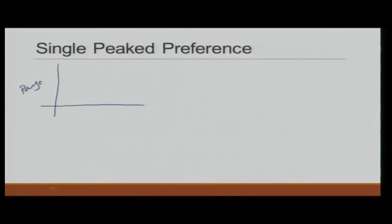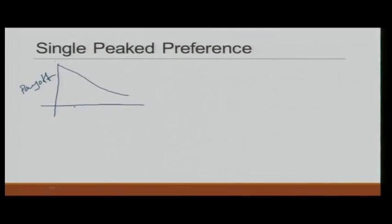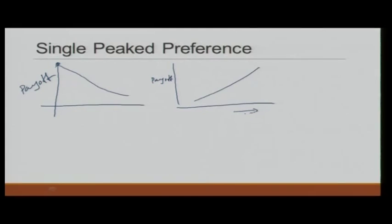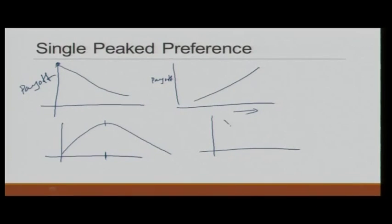The winner is decided by majority rule, and voters have single-peaked preferences. What is a single-peaked preference? On the payoff-versus-ideological-position graph, a preference is single-peaked if there is exactly one highest point. For example, someone who likes the extreme left has decreasing payoff as we move right — that is single-peaked. A centrist who likes the middle more than the extremes is also single-peaked. But a preference with two highest points is not single-peaked, and we do not allow that.